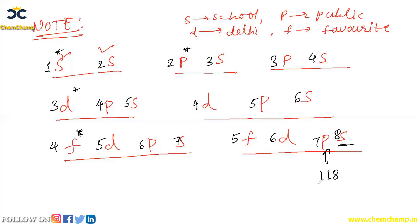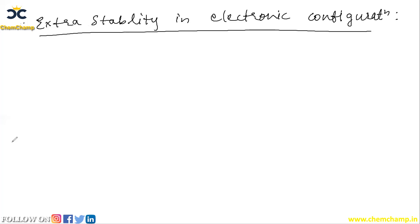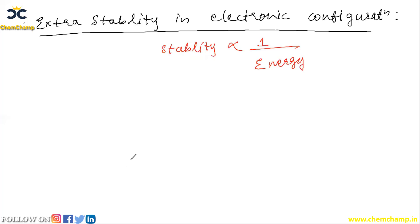Now let's discuss a related topic: extra stability due to electronic configuration. Stability is inversely proportional to energy — meaning an atom with less energy is more stable, and one with more energy is less stable. Extra stability means an atom has arranged its electrons in a way that it has attained some extra stable state by losing some energy.